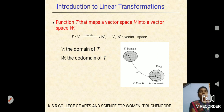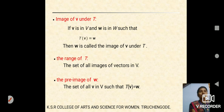First, introduction. The function T that maps a vector space V into a vector space W — here V is said to be a domain and W is said to be a co-domain. Applying mapping T from vector space V into W is defined by T mapping from V to another vector space W. The set of all images of vectors in vector space V is said to be the range of T.